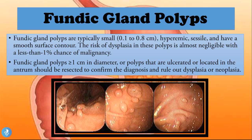Fundic gland polyps which are more than one centimeter in diameter, or polyps that are ulcerated or located in the antrum, should be resected to confirm the diagnosis and rule out dysplasia or neoplasia. Only if they exceed one centimeter do we have alarming concerns, and they are usually surgically removed.